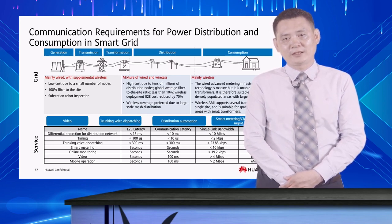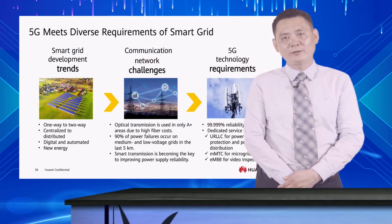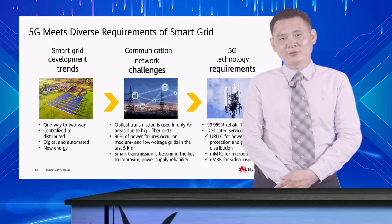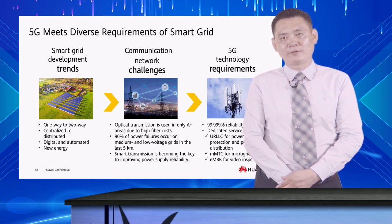Therefore, the communication requirements in smart grid are mainly reflected in network latency, bandwidth, and reliability. 5G can meet the diverse requirements of smart grid and serve as a source for other usage based on new energy. The smart grid is transformed from one-way to two-way, and will also evolve from centralized to distributed.